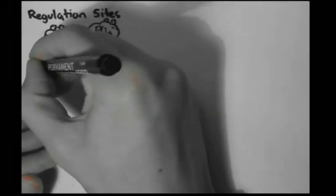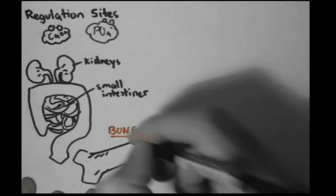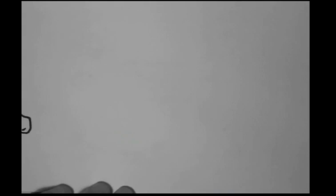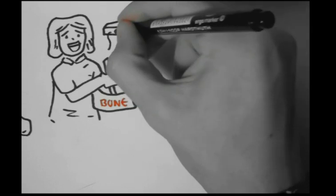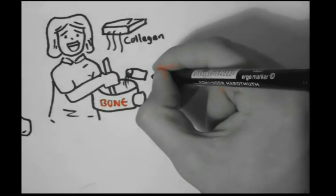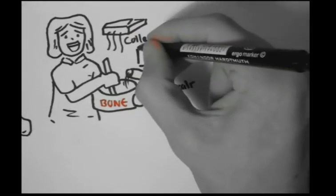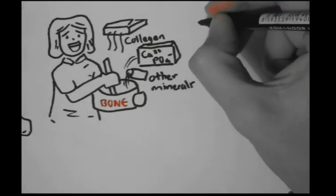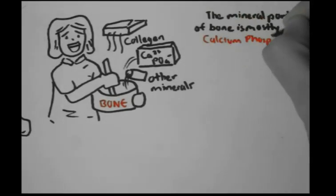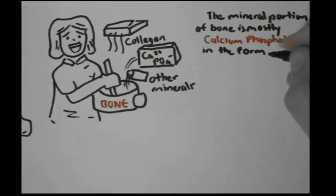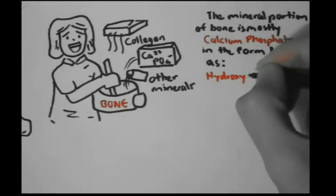The regulation sites for calcium and phosphorus, as discussed, are the kidneys and the small intestine. But one of the main regulation sites is actually the bone. Bone is made up of collagen and other minerals, particularly calcium phosphate. The mineral portion of bone is mostly calcium phosphate in the form known as hydroxyapatite crystals.